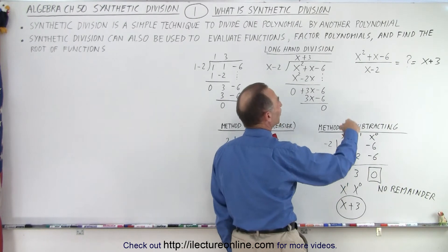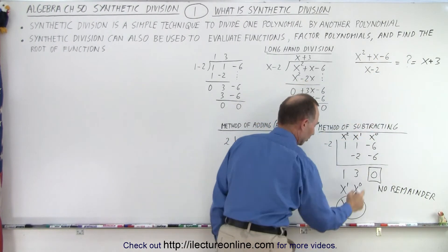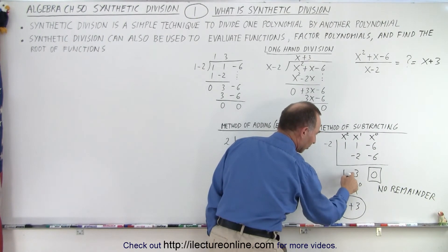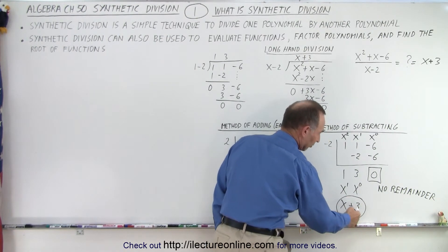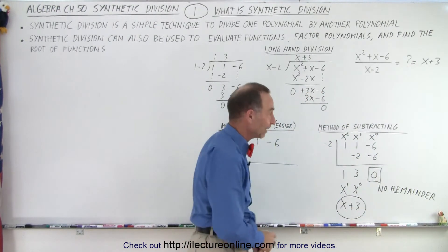And so this is the solution of our division. When we take x squared plus x minus 6 divided by x minus 2, the solution is x plus 3, 1 times x plus 3 times x to the 0, which is simply 1. So we get x plus 3. Now they match. Now we can see that we did it correctly.